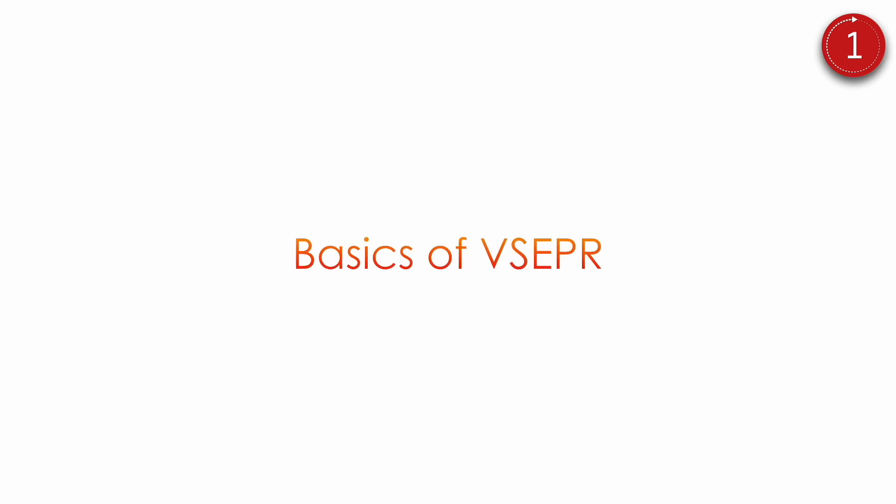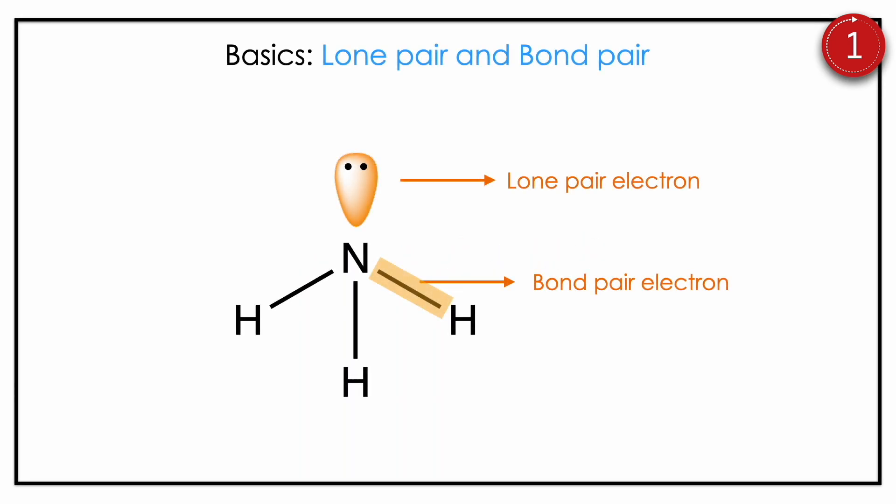Before we get into more detail, let us look at the basics of VSEPR. First, what is a lone pair and a bond pair? Bond pair means bonding electrons — the pair of electrons that form a bond, as in NH. On the contrary, lone pair electrons don't involve in the bond — they are non-bonded electrons. You should know the difference between lone pair and bond pair.